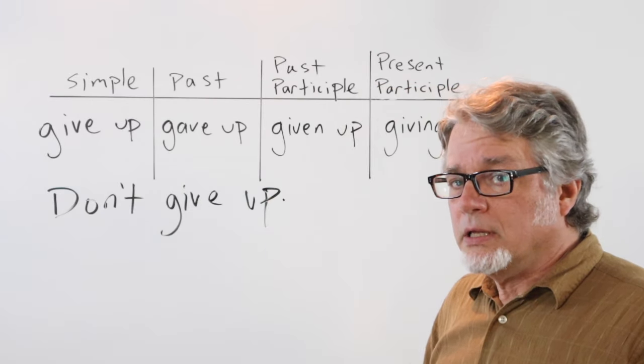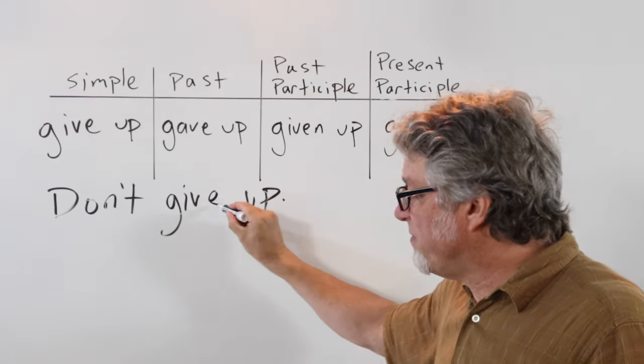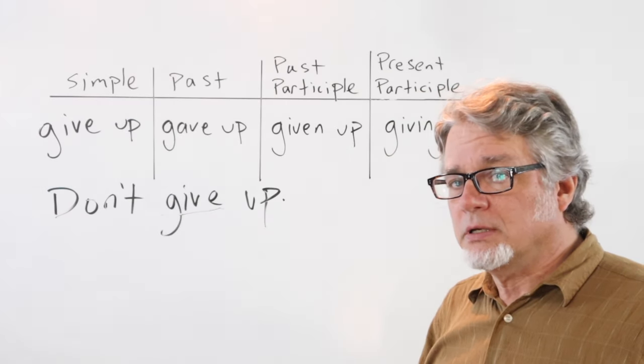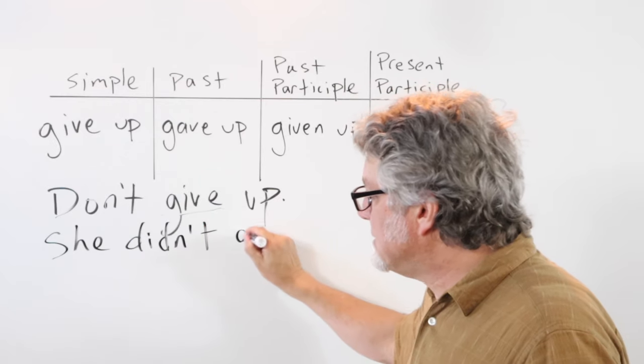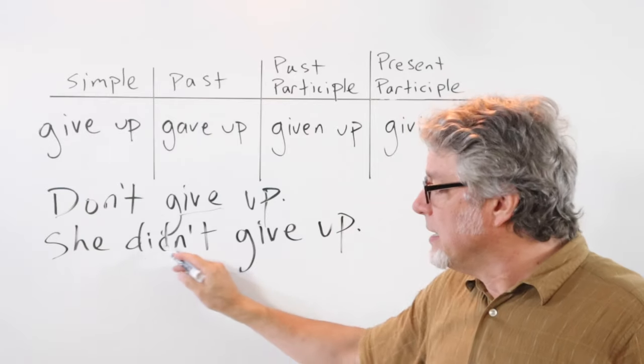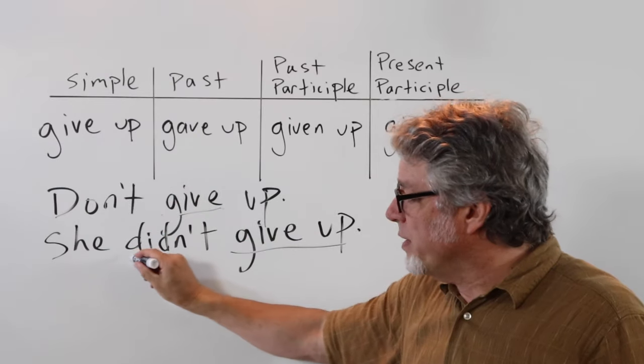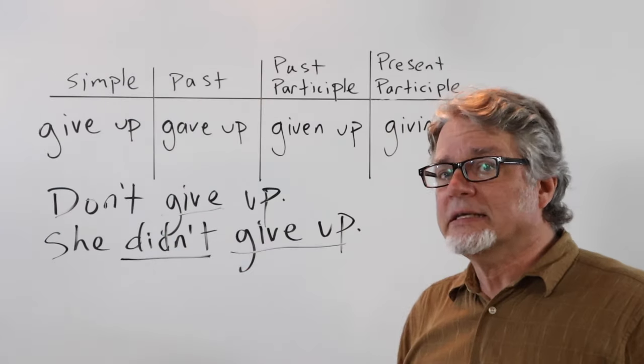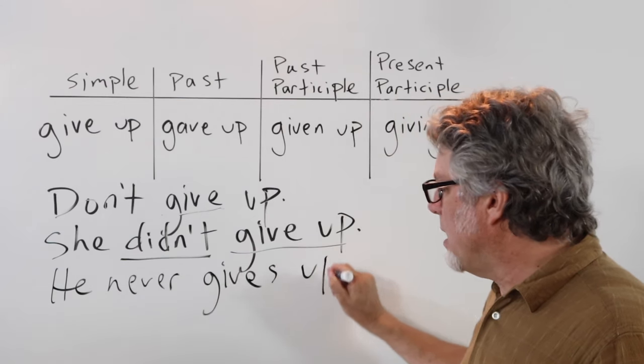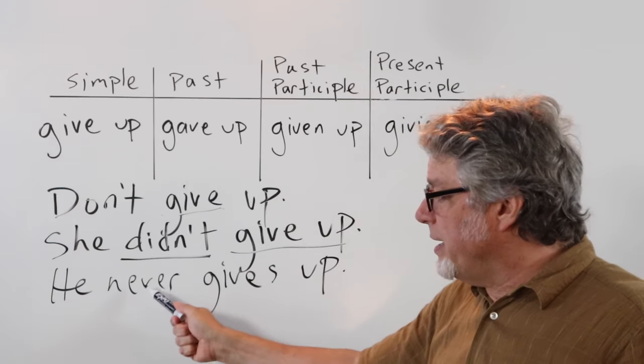Don't give up - here the subject is you and this is negative. This is the simple form of the phrasal verb. Don't give up. She didn't give up - this is in the past tense. The phrasal verb here is in the simple form with did and not. He never gives up - here the sentence is in the present tense and the word never goes before give up.